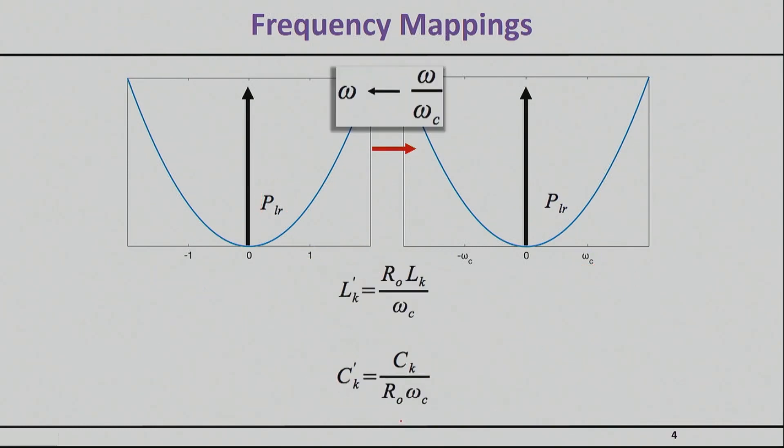So the way we basically do this mapping is we do a mapping from the omega domain to the omega by omega C domain. So essentially it means everywhere you saw omega before, plug in omega by omega C. And so that means that you will have two new elements, so the L element that we had before will be the old one divided by omega C, and the C element that we need will be the old one, also divided by omega C.